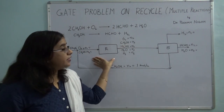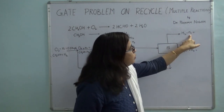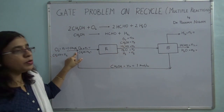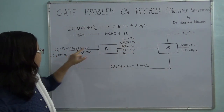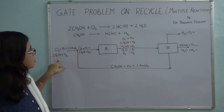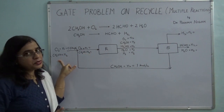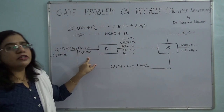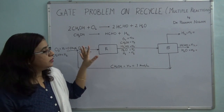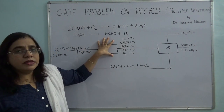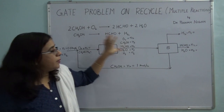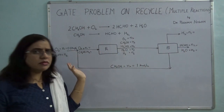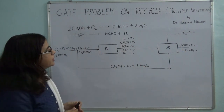Since every subsystem has a degree of freedom of 1, let's start from the mixing point, gather what information we can, and use it iteratively elsewhere.